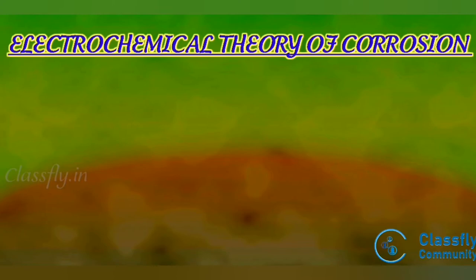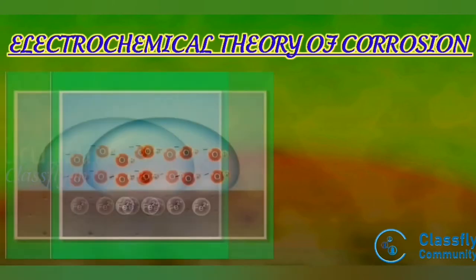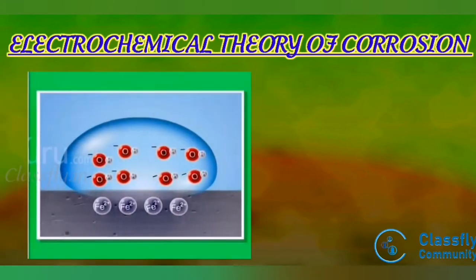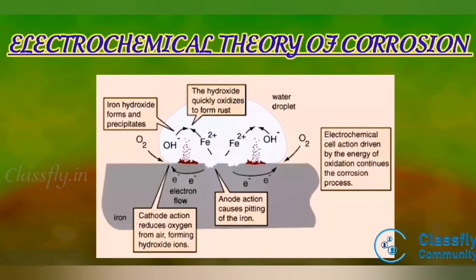Wet or electrochemical theory of corrosion: this type of corrosion occurs when a metal comes in contact with a conducting liquid, or when two dissimilar metals are immersed partly in a solution. There is a formation of a galvanic cell on the surface of the metal. Parts of the metal surface act as anode and the rest act as cathode. The chemicals in the environment and humidity act as an electrolyte.